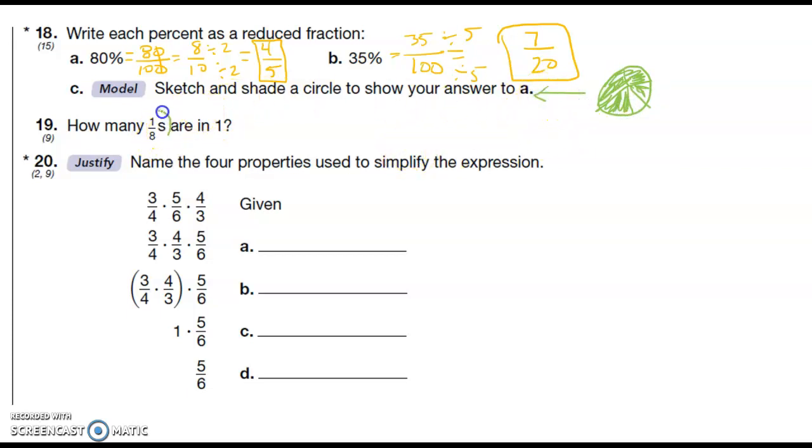Number 19: How many one eighths are in one? Again we go with the reciprocal which means we flip it, and there are eight one eighths in one.